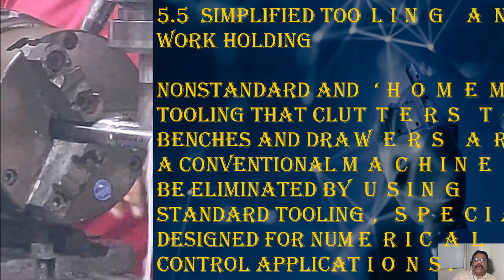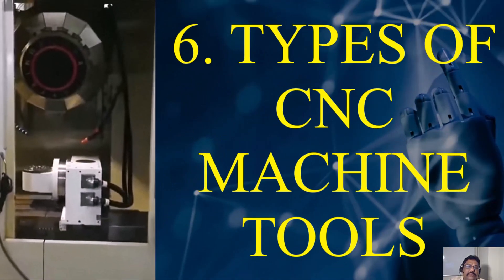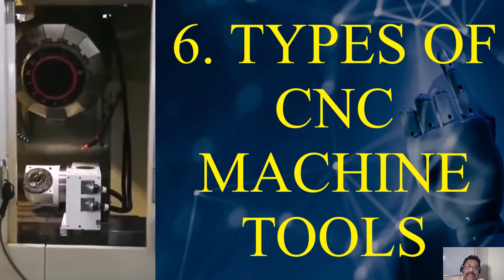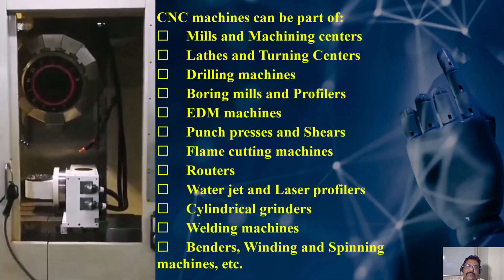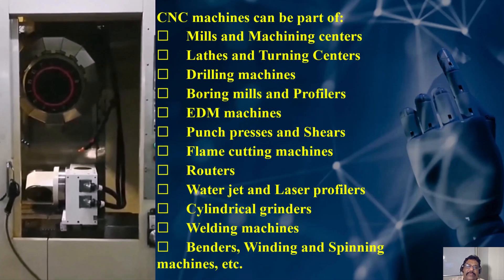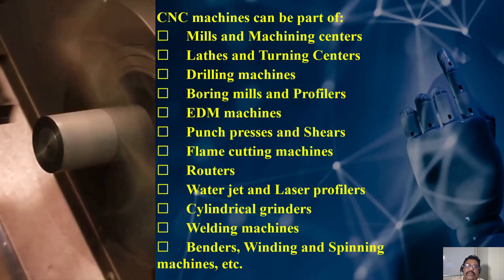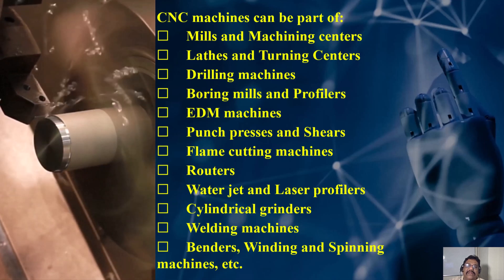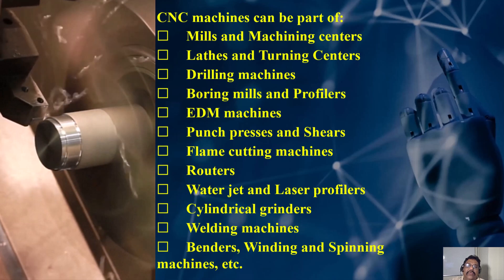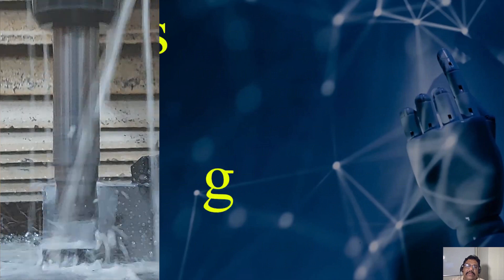Types of CNC machine tools: different kinds of CNC machines cover an extremely large variety. Here is a brief list of some groups: mills and machining centers, lathes and turning centers, drill machines, boring mills and profilers, EDM machines, punch press and shears, flame cutting machines, routers, water jet and laser profilers, cylindrical grinders, welding machines, benders, winding and spinning machines, and more.